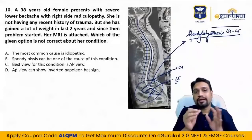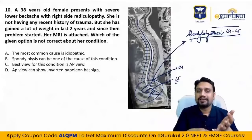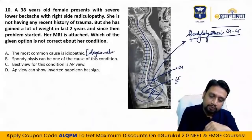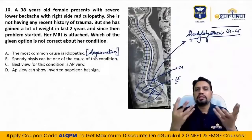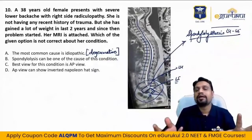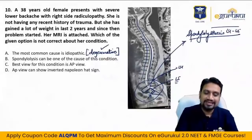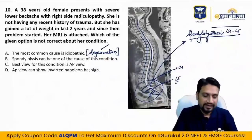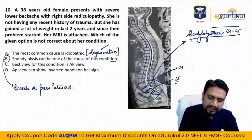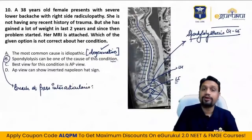Spondylolisthesis can have multiple causes: idiopathic, dysplastic, isthmic, degenerative. The most common is degenerative — vertebral degeneration happens with age and routine activities. Spondylolisthesis involves a breach at the pars interarticularis. How do we observe this breach? It is best appreciated in an oblique X-ray view.